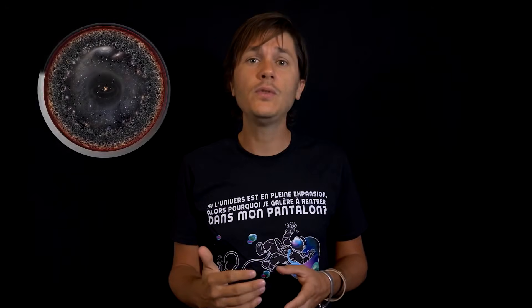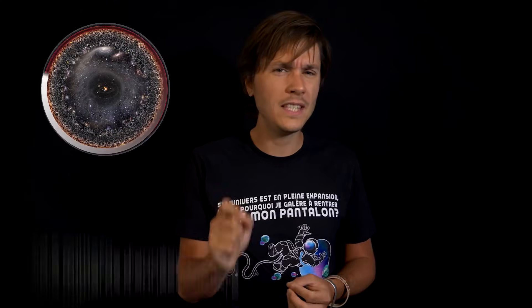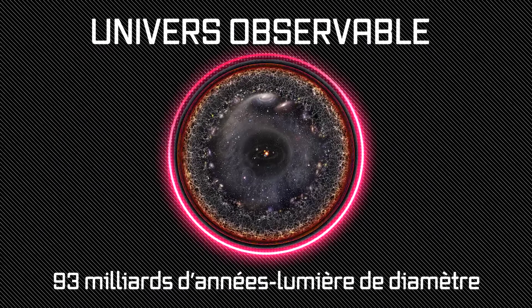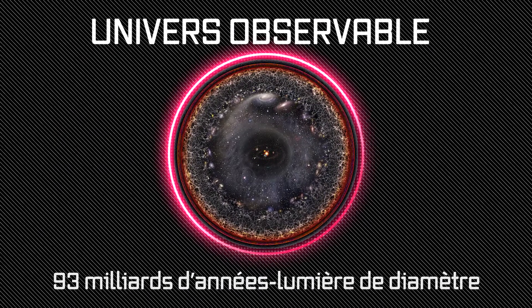except that where it gets sneaky is that this way of thinking assumes that the universe is static and that the distances between the objects in it don't change over time. However, this is very, very far from being the case. The furthest things we've been able to observe, which are located at the edges of this sphere, are actually 46.5 billion light-years away from us. There's room, you know? In other words, the radius of our observable universe is nearly three times larger than the age of the universe would suggest. And if the extent of the bubble we can see is so vast today, it's because the universe is, and has always been, expanding, and not just a little.